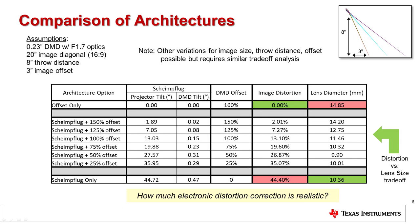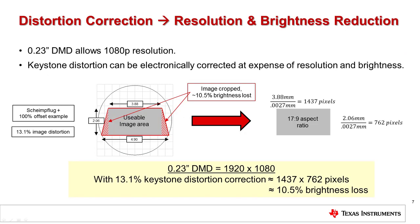The trade-off between lens size and distortion can be made by the customer to determine what is acceptable for the end product. However, this poses the question: how much electronic distortion correction is realistic? Through the use of image processing, a keystone distorted image can be corrected to a rectilinear image, but results in a partial loss of resolution and a reduction in brightness. The example shown here is an image with 13.1% image distortion, which results from the architecture combining 100% DMD offset and partial Scheimflug. The trapezoidal image shape needs to be cropped to a rectangular shape. The usable image area shows that 10.5% of the projected image area is cropped, and thus 10.5% of the brightness of the image is lost.